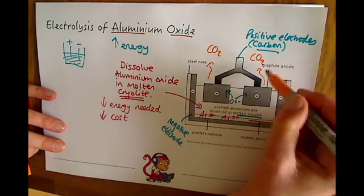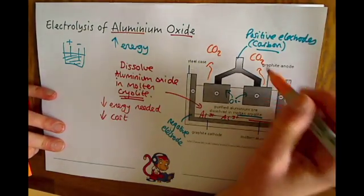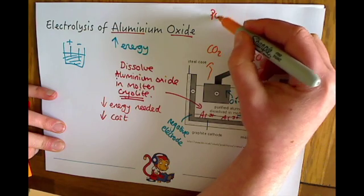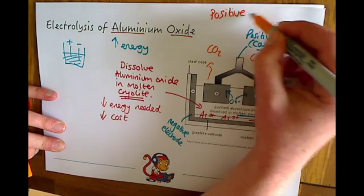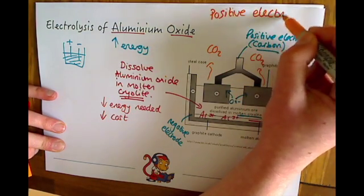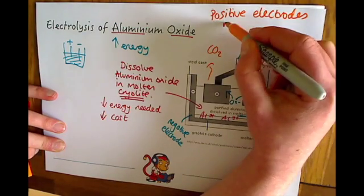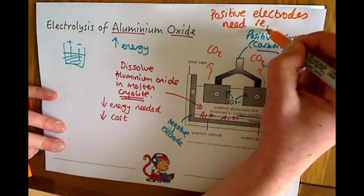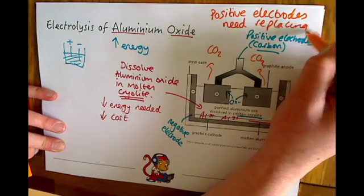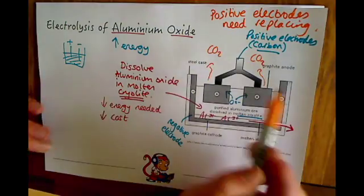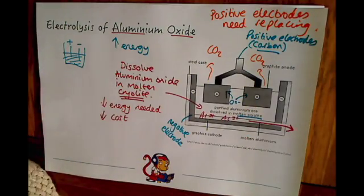What this means is these electrodes have to be replaced—the positive electrodes will need replacing. They might ask you why they need replacing in the exam, and you'd answer: because the oxygen reacts with the carbon and carbon dioxide is released.